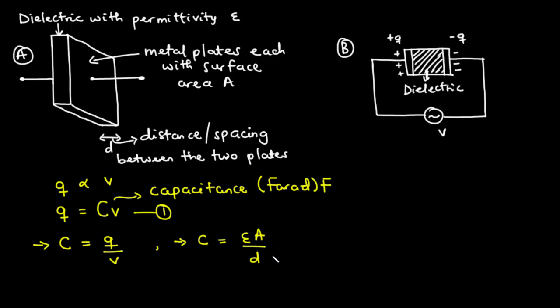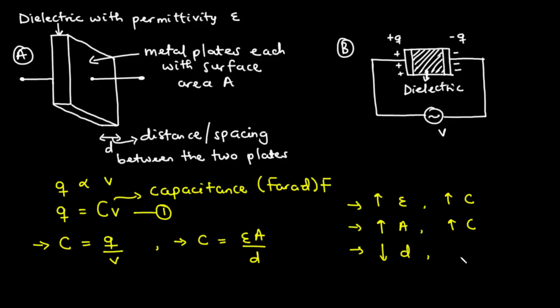Now let's understand the relationship between each of the three parameters and capacitance. First, the higher the permittivity of the dielectric material, the greater the capacitance. Second, the larger the surface area of each metallic plate, the greater the capacitance. Third, the smaller the spacing between the two metallic plates, the greater the capacitance. In the next section we will look at the current-voltage relationship of a capacitor.